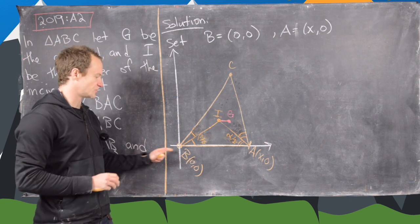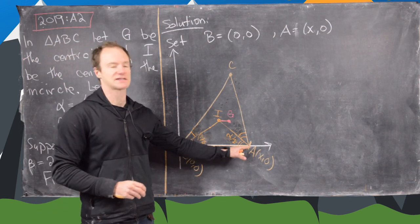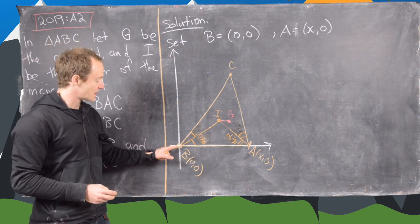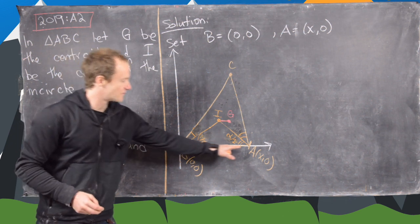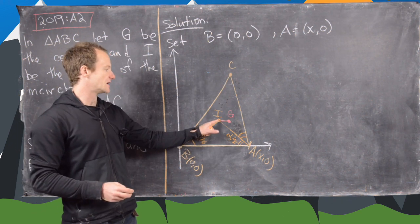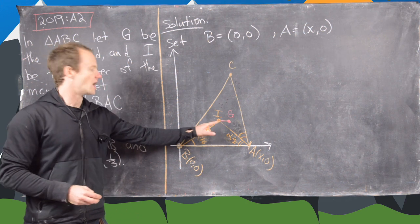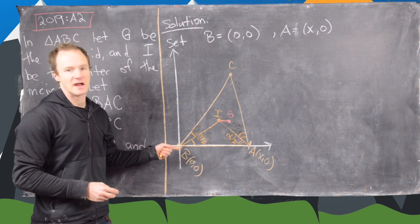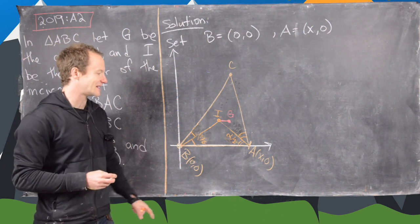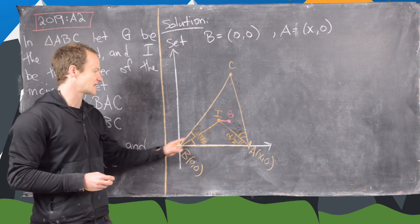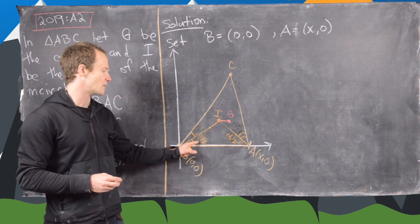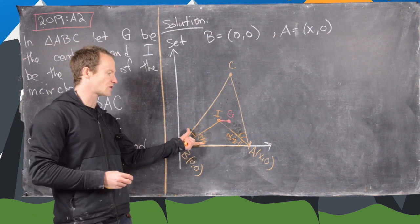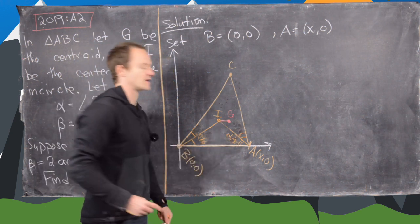So I have B here at the origin, A is along the x-axis and C is up here in the first quadrant. It's a commonly known fact that the line segment from each vertex of the triangle to the incenter bisects the corresponding angle. So the line segment from B to I gives me beta/2 and beta/2, and alpha/2 and alpha/2 from A, since this whole angle is beta and this whole angle is alpha.